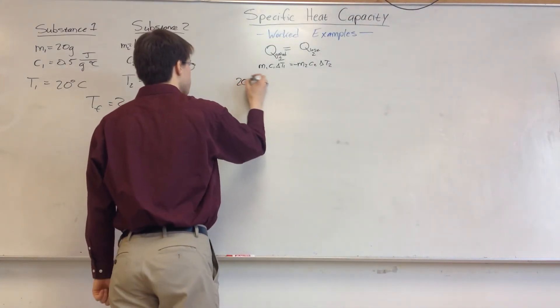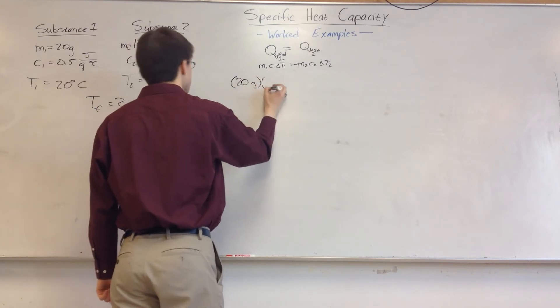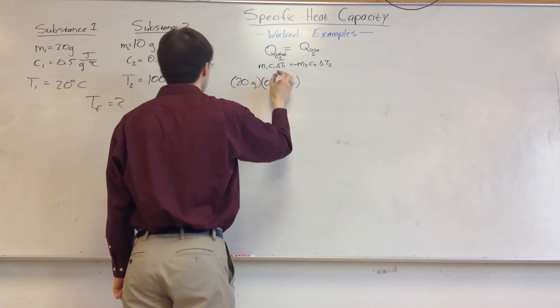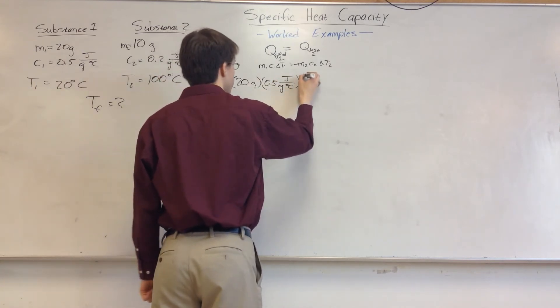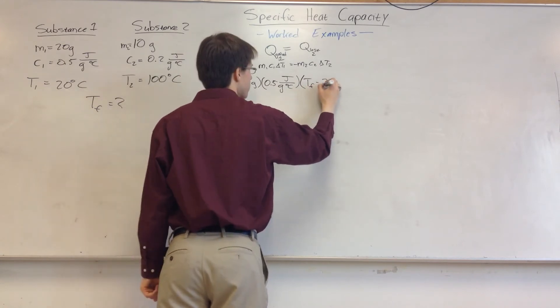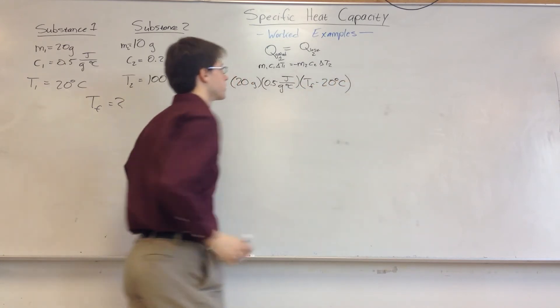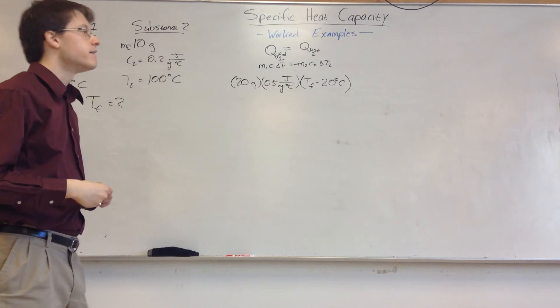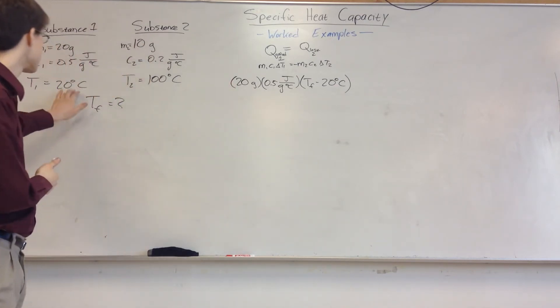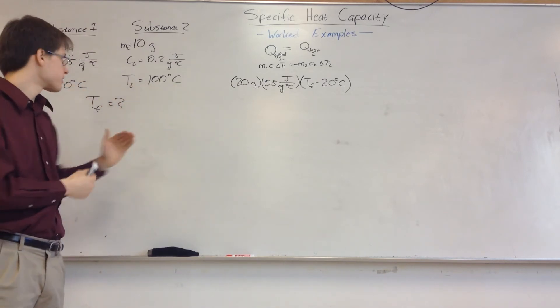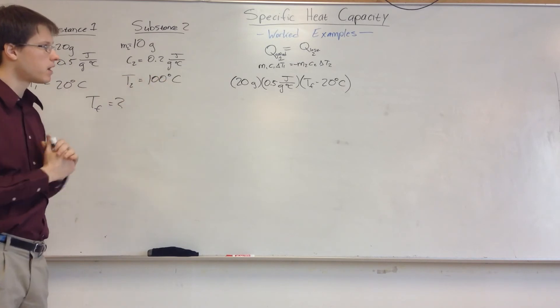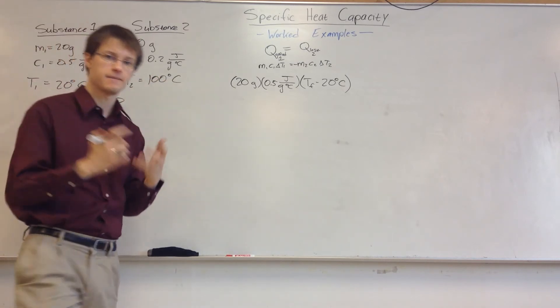So M1 is 20 grams. C1 is 0.5 joules per gram degrees Celsius. And the change in temperature is going to be my final temperature, which I don't know, minus my initial temperature, which is 20 degrees Celsius. Now I have to decide, before I move on, is this going to be positive or negative? Well, this substance starts at 20. This one starts at 100. So if they're going to meet at some point in between, this one's going to heat up. So this is going to be a positive number, because it has to gain heat.